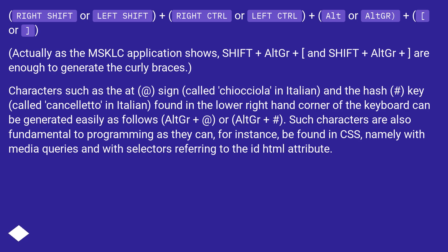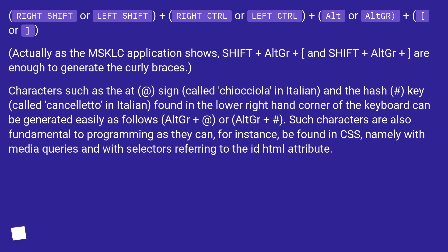Characters such as the at-sign, called 'chiocciola' in Italian, and the hash key, called 'cancelletto' in Italian, found in the lower right-hand corner of the keyboard, can be generated easily as follows: AltGr plus at, or AltGr plus hash. Such characters are also fundamental to programming, as they can be found in CSS, namely with media queries and with selectors referring to the id HTML attribute.